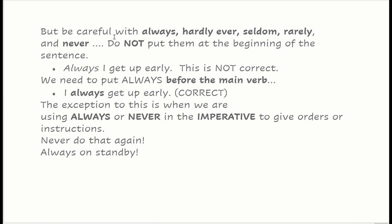Be careful with always, hardly ever, seldom, rarely, and never — don't put them at the beginning of a sentence. For example, 'Always I get up early' is not correct. The correct form is 'I always get up early.' The exception is when we use always or never in an imperative to give orders, instructions, or commands — for example: 'Never do that again.'